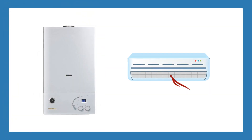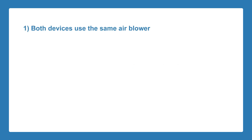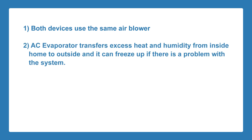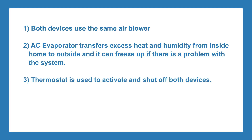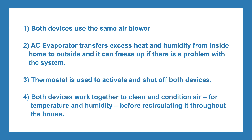If you are looking to replace your furnace, it might be in your best interest to replace your air conditioner as well, because air conditioners and furnaces are dependent on each other in many ways. First, both devices use the same air blower to spread warm or cool air throughout the home. Second, the AC evaporator coil's job is to transfer excess heat and humidity from inside your home to outside, and it can freeze up if there is a problem with the system. Third, the thermostat is used to activate and shut off both devices.